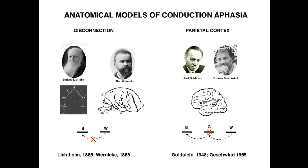That is the classical model of language as we've known it for a long time, and conduction aphasia, whose primary symptom is repetition deficits, is due to a disconnection between Broca's and Wernicke's area. Those patients can still articulate language and they have intact auditory comprehension, but they can't repeat what they hear, so the transfer of information between the superior temporal gyrus and the posterior inferior frontal gyrus is interrupted — that was the classical disconnection model.